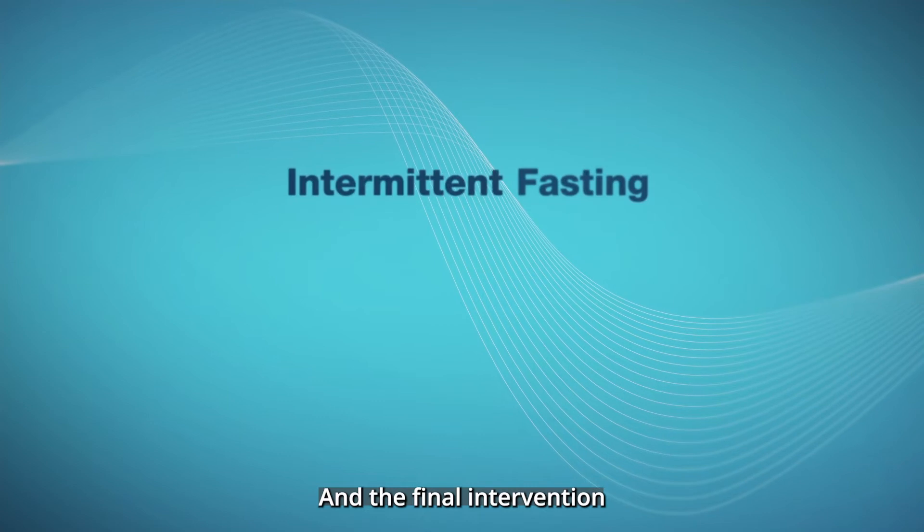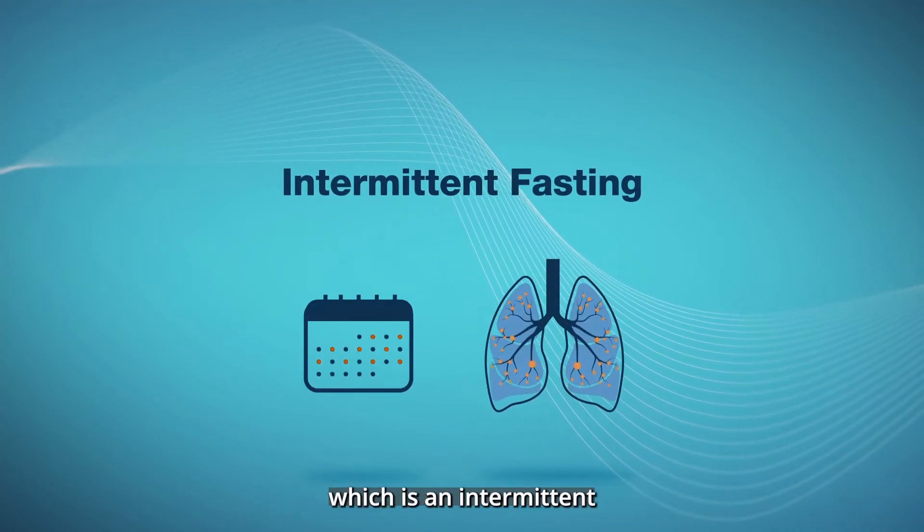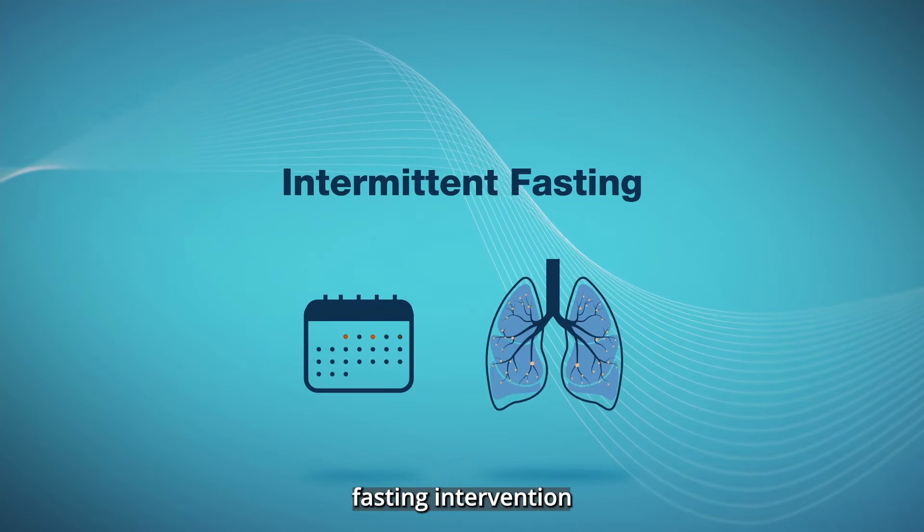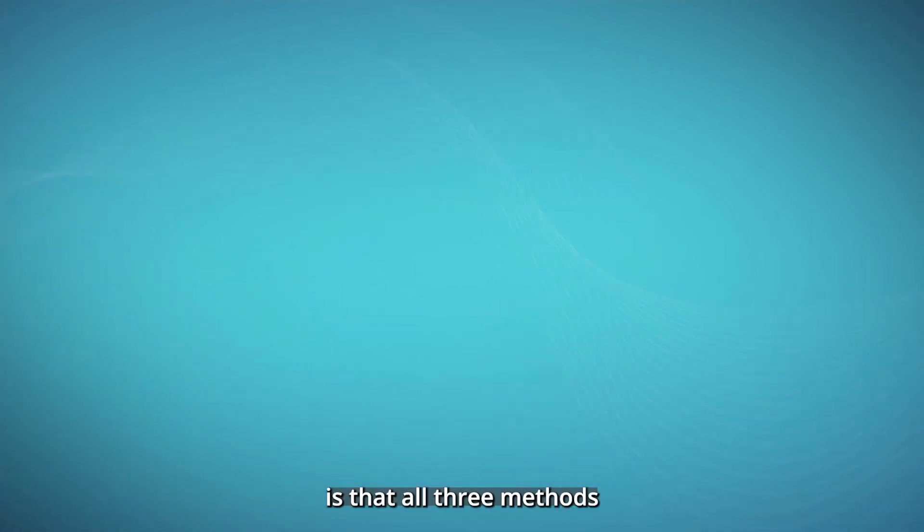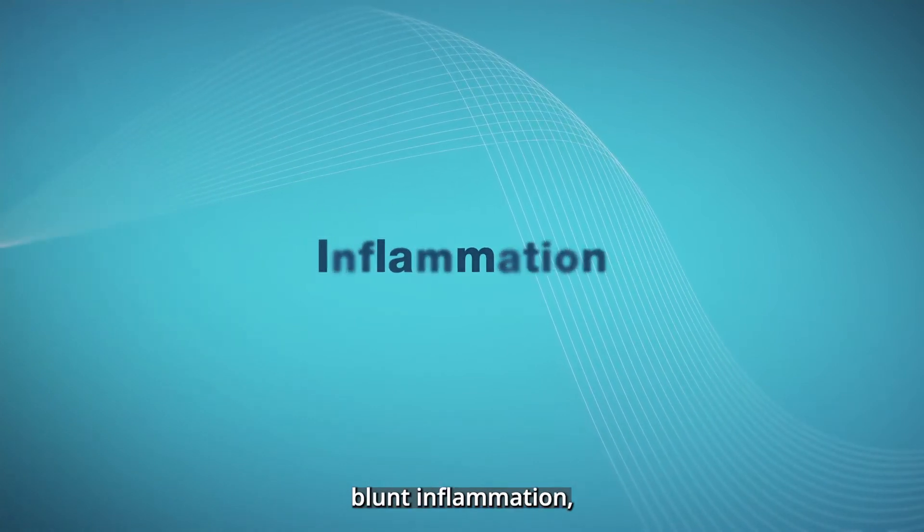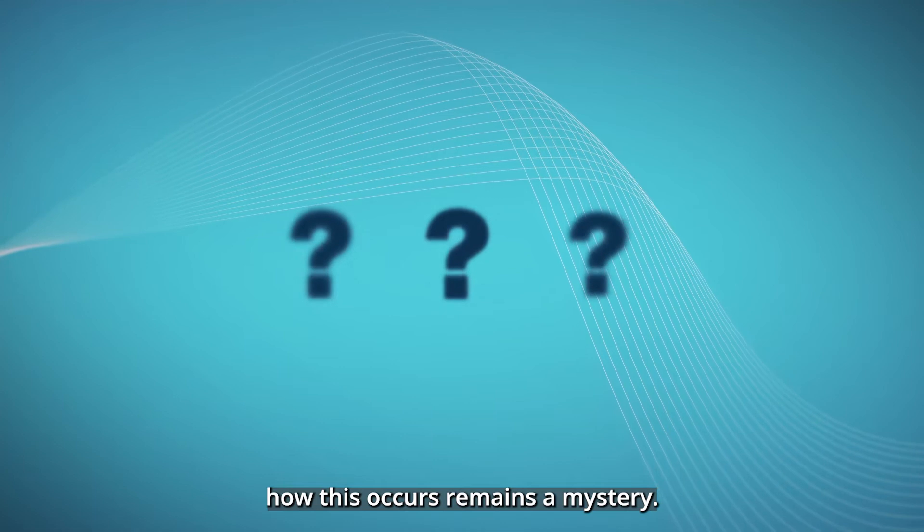And the final intervention is an alternate day caloric restriction, which is an intermittent fasting intervention which reduces asthma. One thing we know is that all three methods blunt inflammation, though how this occurs remains a mystery.